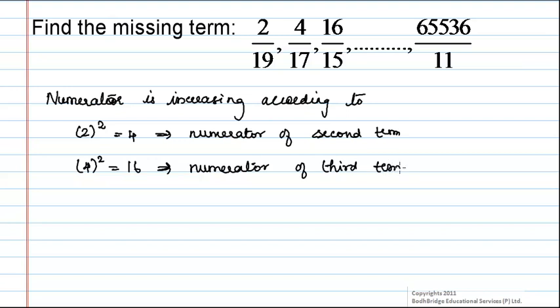Now, we have to find the numerator and denominator of the fourth term. That is, 16 square is equal to 256 which will be the numerator of fourth term.